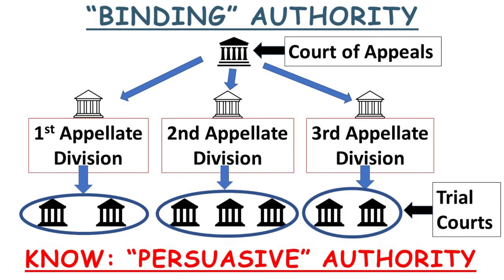If your judge is under the first appellate division and you find a helpful child custody ruling in the third appellate division and it's not binding on your judge, you can still use that case in your closing arguments along with first division cases. As long as it's in your state's court system, even if it's not binding authority that your judge must follow, it can be persuasive authority — your judge can get guidance from decisions in other jurisdictions in your state, but not from other states.